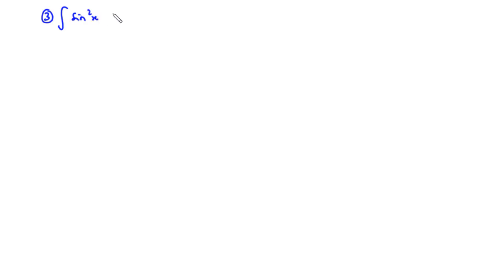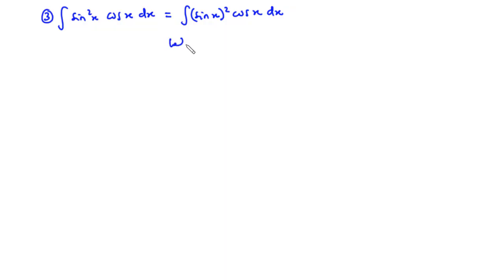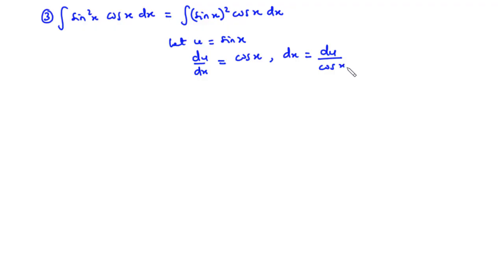Now let's think of a more complex example. Let's try to find the integral of the function sin squared x times cos x dx. We can express this as the integral of (sin x) squared times cos x dx. It is very important that we make u equal to sin x. Therefore du/dx equals cos x, and for that matter dx equals du over cos x.